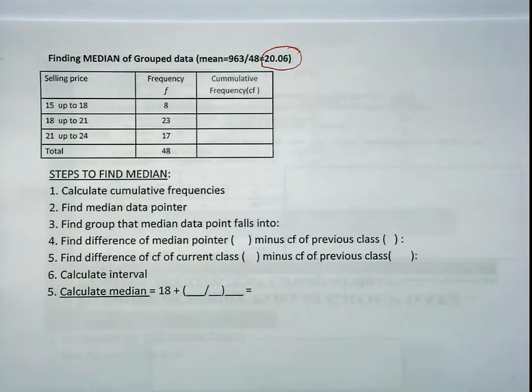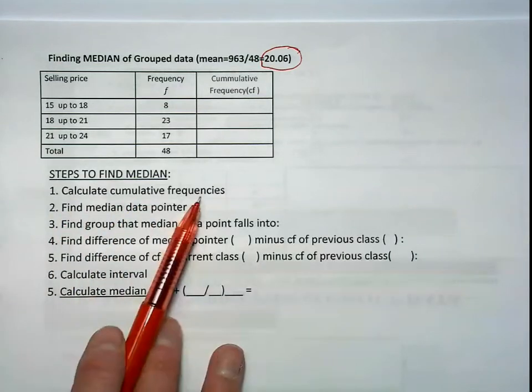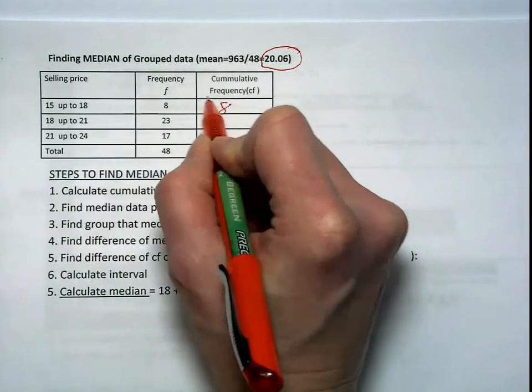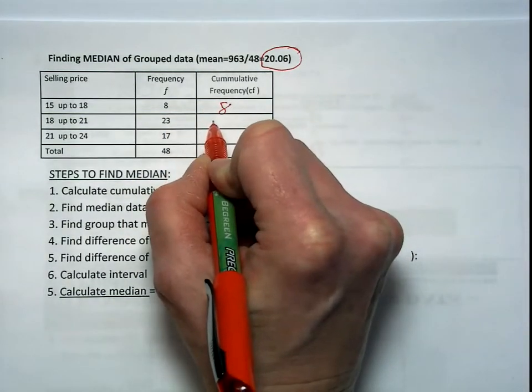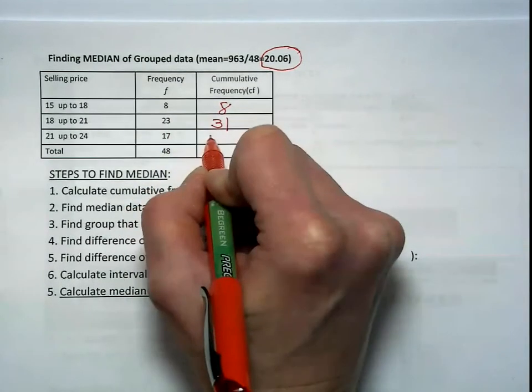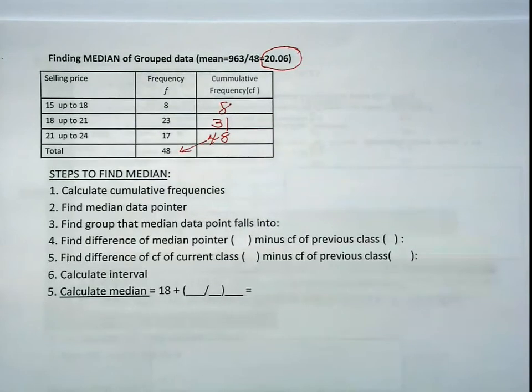So I hope you did get that after you paused it. Now we're going to find the median of the group data, and it's an estimate because we've lost the integrity or we've lost the individual data points. The first thing I want you to do is calculate the cumulative frequencies. Copy over the first 8. 8 plus 23 is 31. 8 plus 23 plus 17 is 48, which should correspond to your sample size.